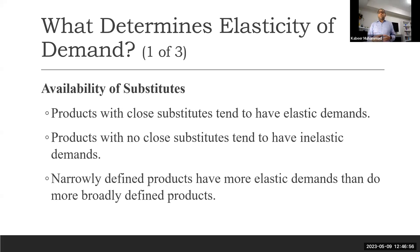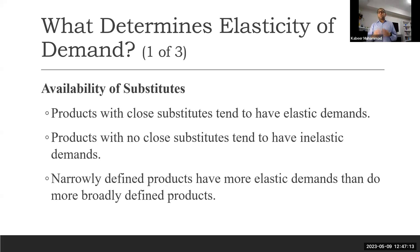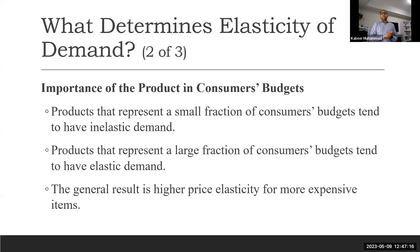Similarly, foods are necessities broadly, but when talking about a very specific vegetable or food, if its price increases, we can simply eat another one. So narrowly defined products have more elastic demand.